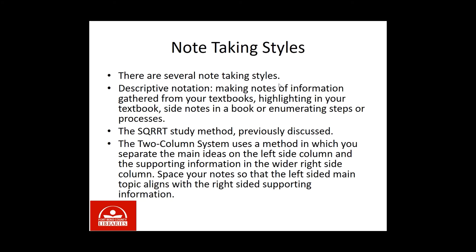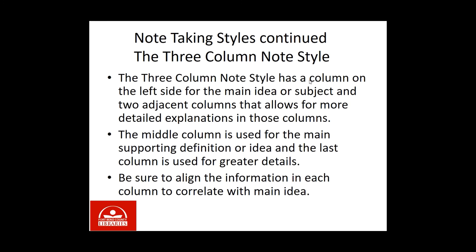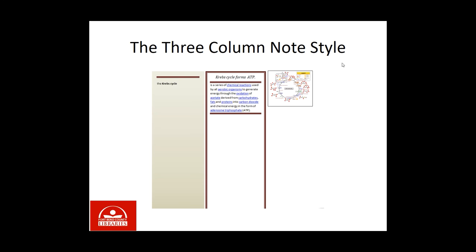There are several note-taking styles. Descriptive notation involves making notes from your textbooks, highlighting, and side notes in the book, enumerating steps or processes, and using the SCORCH study method. A two-column system separates the main idea in the left column and supporting information in the wider right column — space your notes so the left main topic aligns with the right supporting information. The three-column note style has the main idea on the left, a middle column for the main supporting definition or idea, and a last column for greater detail. Be sure to align information in each column with the main idea.